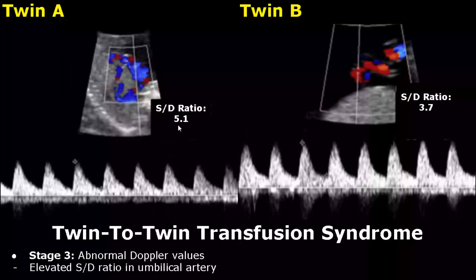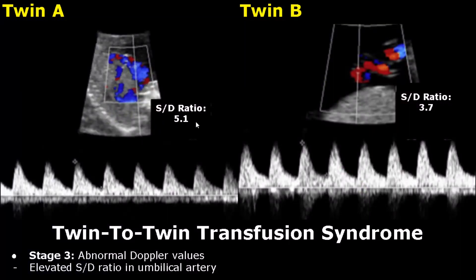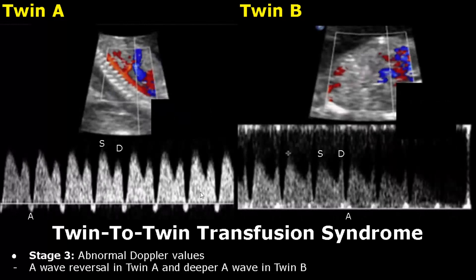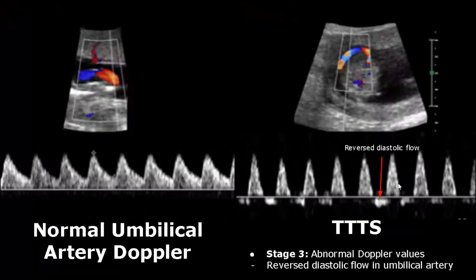In stage 3, abnormal Doppler values will be seen — the umbilical artery S/D ratio will be elevated. Abnormality in the A wave of the ductus venosus can occur as well. In these images there is A wave reversal in twin A and a deeper A wave in twin B. For the umbilical artery, reversed diastolic flow may be observed, with the diastolic flow seen below the baseline.